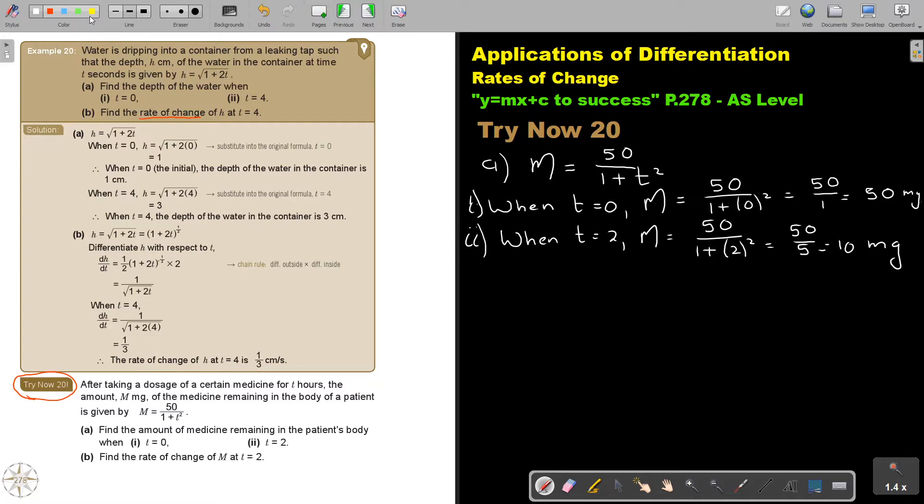And now we will come to part B. Find the rate of change. Rate of change means gradient of a curve. Differentiate. So I will just take my formula and get it ready to differentiate. I'm just taking this part. Let me first write it. Now I can differentiate.